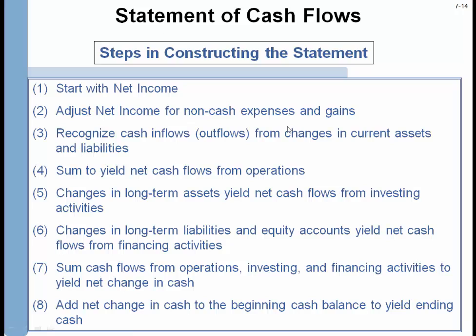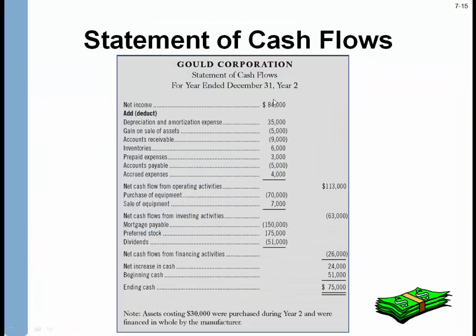Essentially what you're doing is starting with net income and ending up with a net change in cash, picking up the different items in each category. Cash from financing involves long-term liabilities and equity. Cash from long-term assets is net cash flows from investing. Starting with net income of $84,000, adding back non-cash items, subtracting the accrual gain, and accounting for changes in current assets and liabilities gives a positive cash flow from operations of $113,000. They also bought equipment for $70,000 and sold equipment for $7,000.